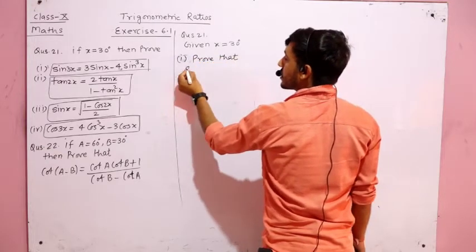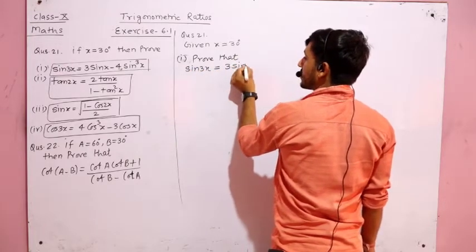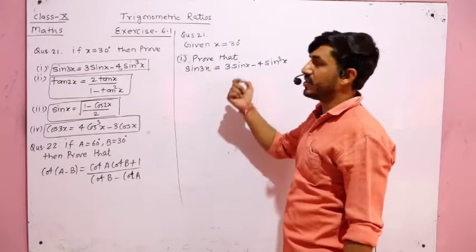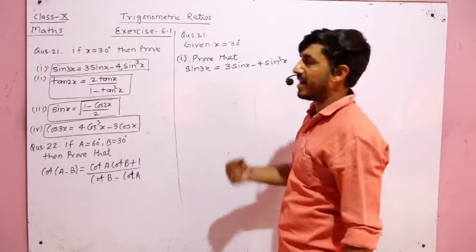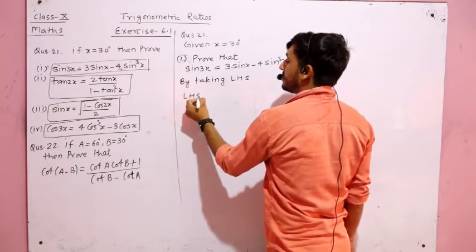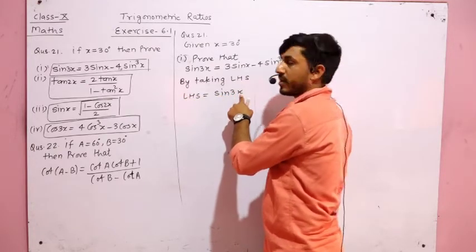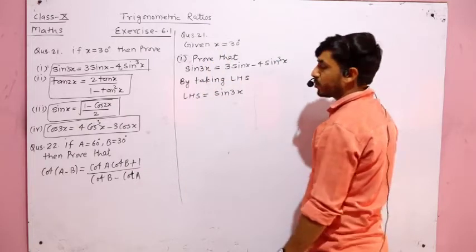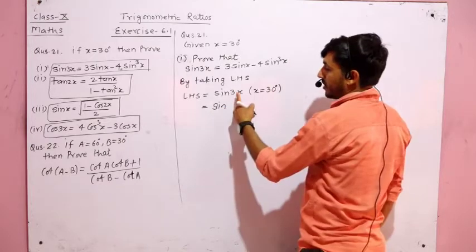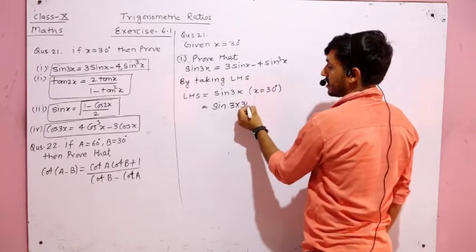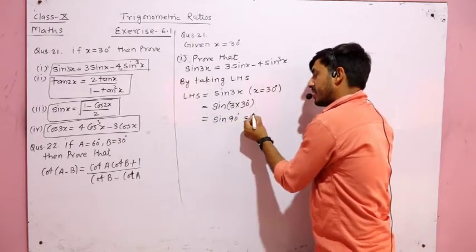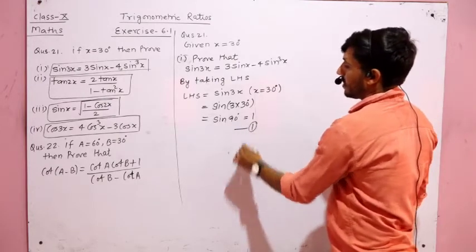Taking LHS: LHS = sin 3x. We substitute x = 30°, so we get sin(3 × 30°) = sin 90°. From the table, sin 90° = 1. This is taken as equation number 1.